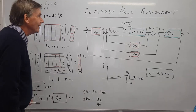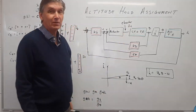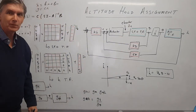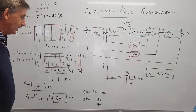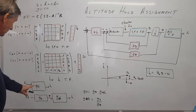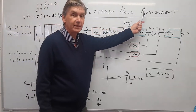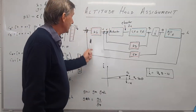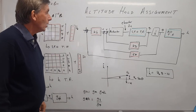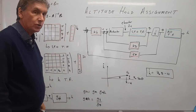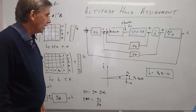Hi, good afternoon. Looking at the altitude hold assignment. It's very windy in my garage today so you hear some whistling — it's the garage door. This is the block diagram of a typical altitude hold control system. Let's have a look at some of the parts to it.